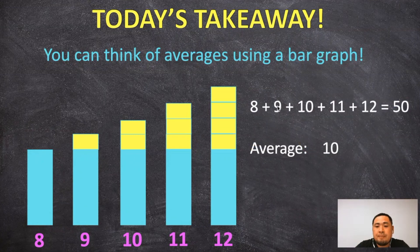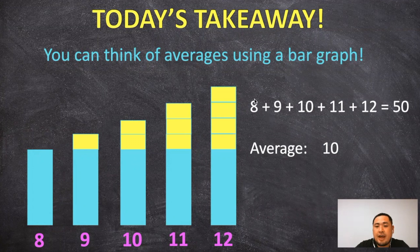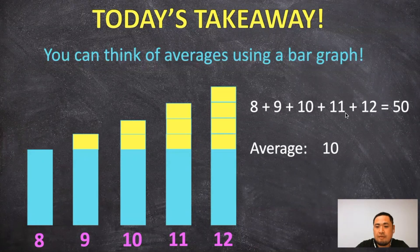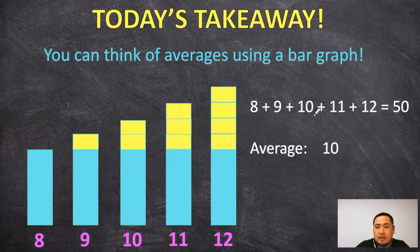But in this example, when we are adding five consecutive numbers, and there are an odd number of terms, in this case there are five, we know that the average is always going to be the middle number right here.